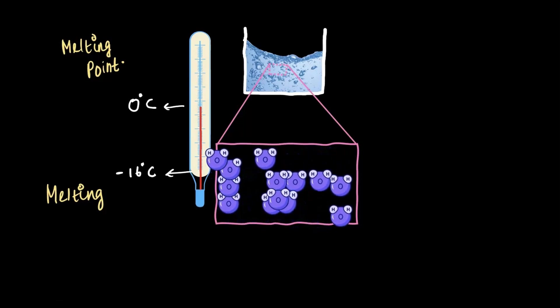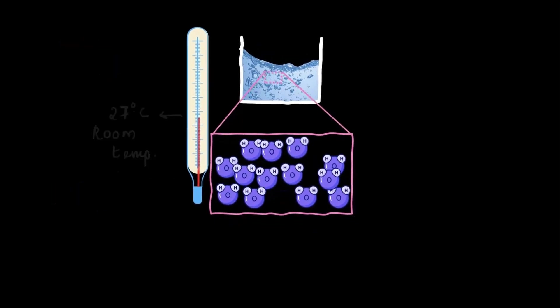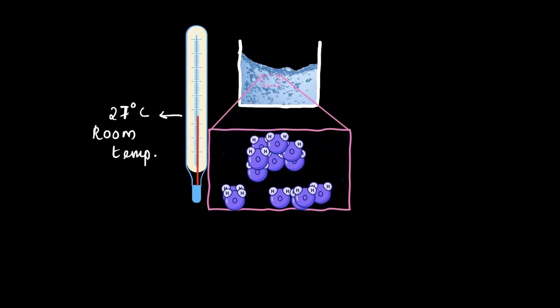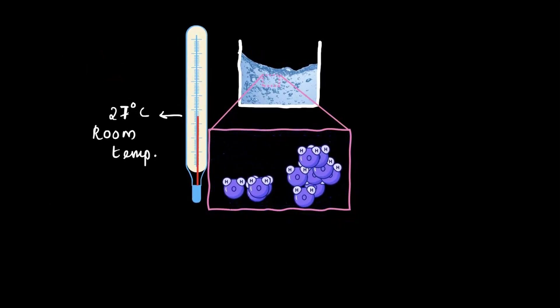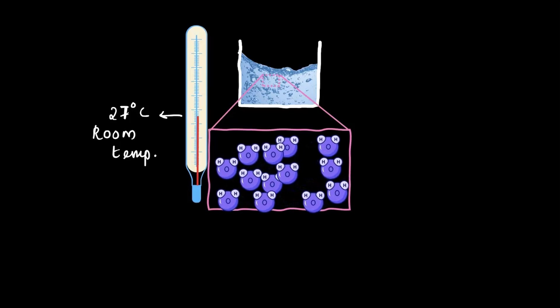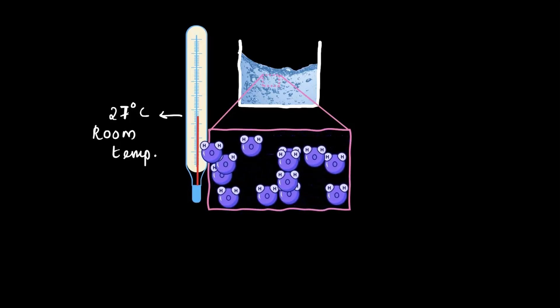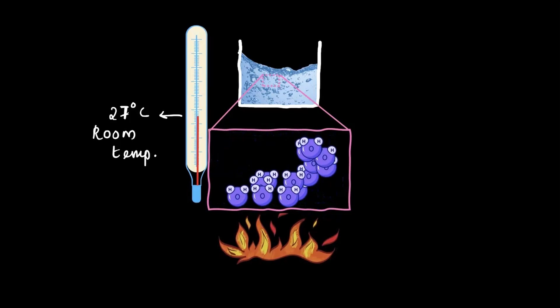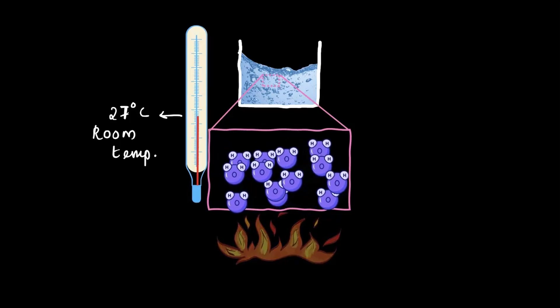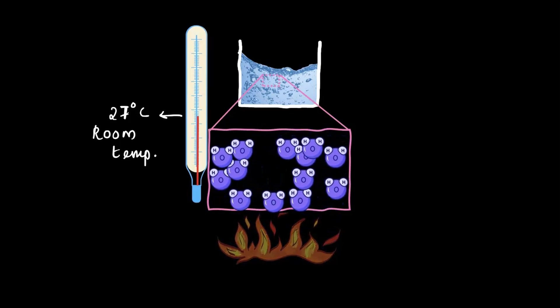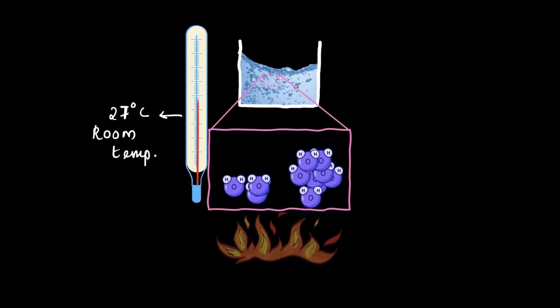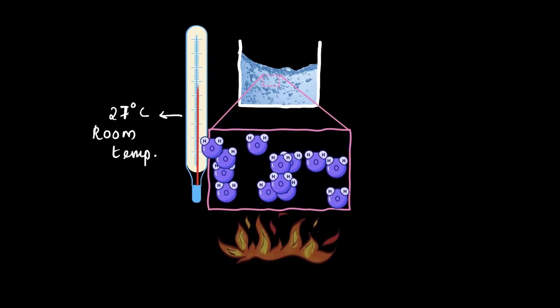All right, now let's look at water in its liquid form, just plain water at 27 degrees Celsius, which is a standard room temperature. Now as we know, we can change water from one form to another by applying heat. Let's do the same here. So when we start heating, the temperature rises and with it, the energy of the water particles increases. As the particles gain energy, they start vibrating faster.